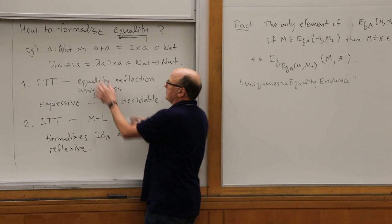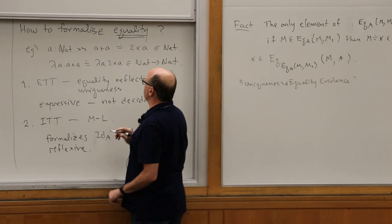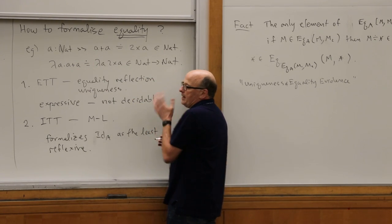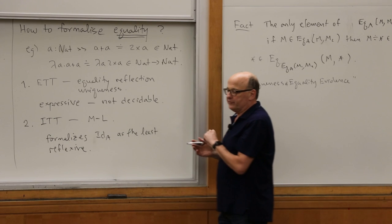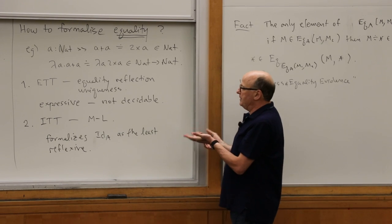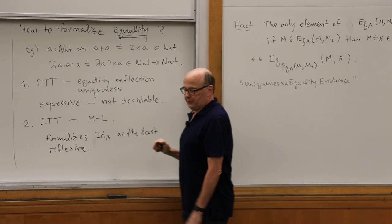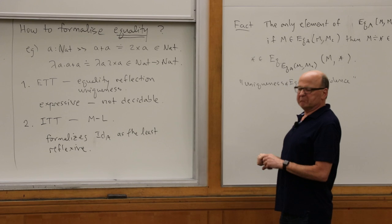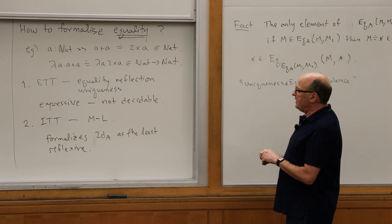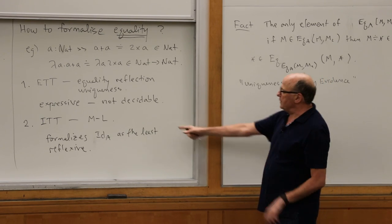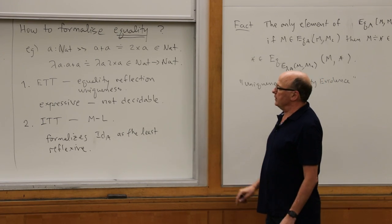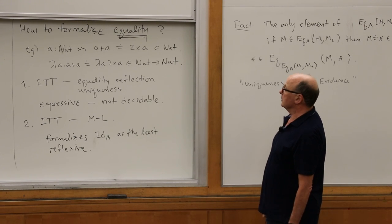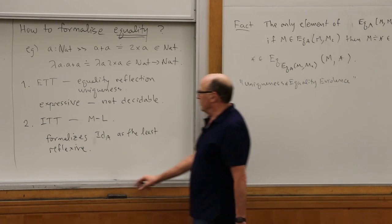What ITT does is it formalizes — and I'll explain with reference to that board — what is called identity as the least reflexive relation, or it tries to. It all depends what you mean by reflexive. Equality in the computational type theory is the least reflexive relation; this is an example of reflexivity.